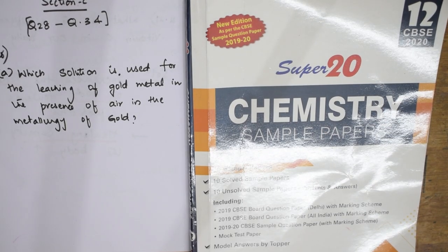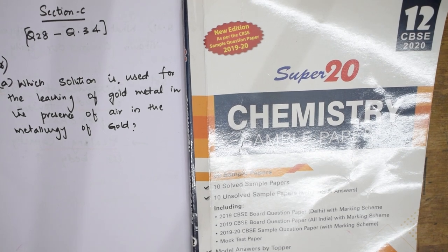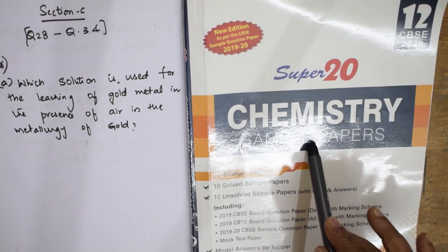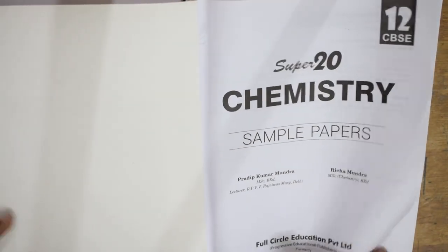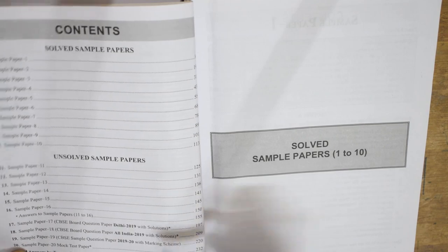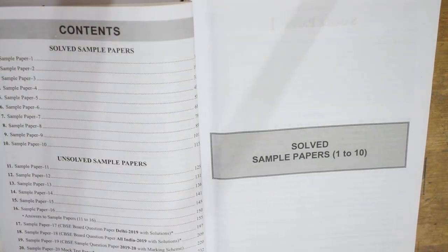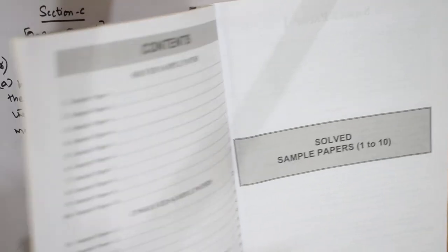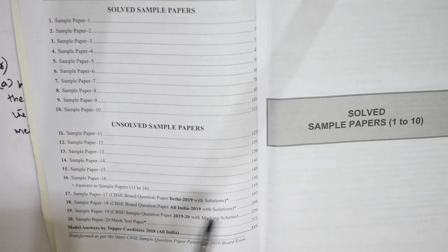Welcome back students to one more session of your Super 20 series — that is the last section, Section C as well as Section D of your Grade 12 CBSE sample paper. The speciality of this book is that it has almost 10 solved sample papers as well as 10 unsolved sample papers.